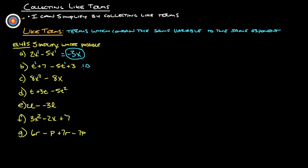7 and 3 is 10—that takes care of those. And then we got t minus 5t is minus 4t. 10 minus 4t will work just fine for that.